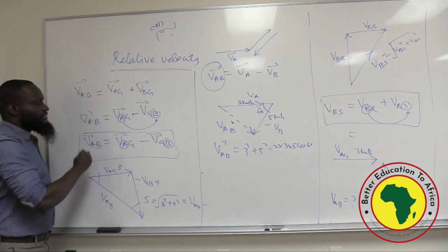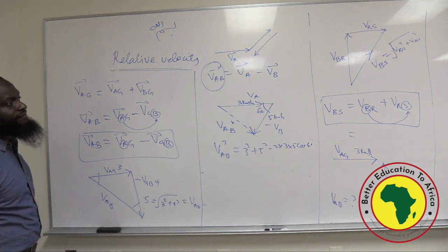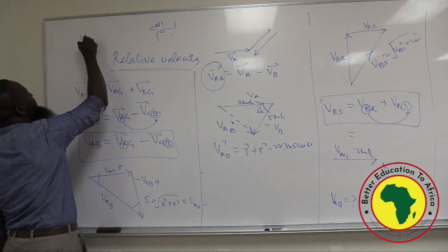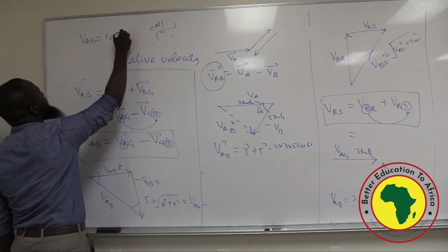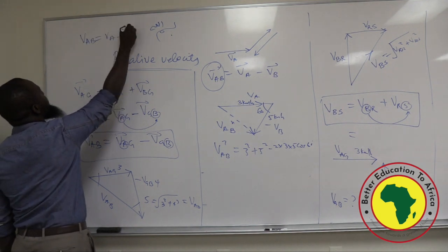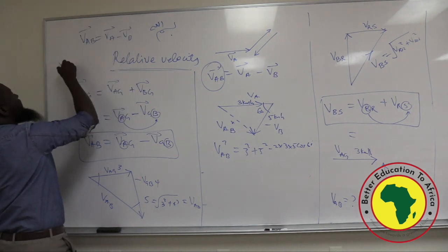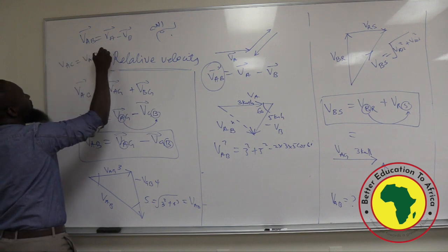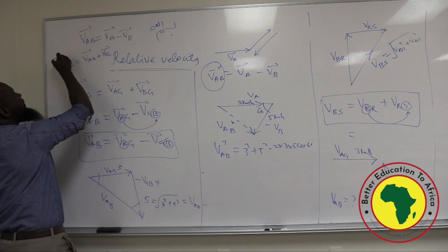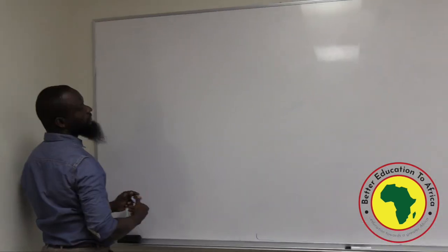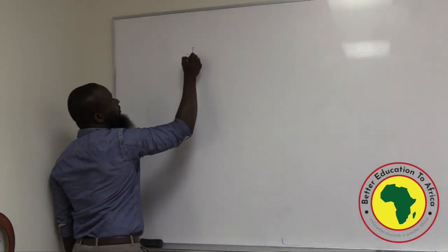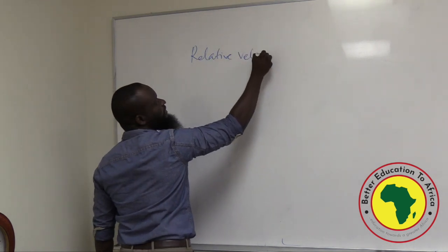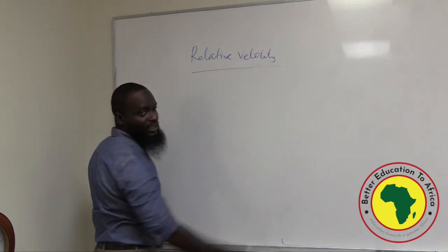So the summary is: if it's a single case, V-AB equals V-A minus V-B, vectorially. And if it is V-AC, it equals V-AB plus V-BC, vectorially. In physics, everything is relative. The Earth is spinning at a speed of 30 kilometers per second, but relative to me, because I'm spinning with it, I don't feel it.